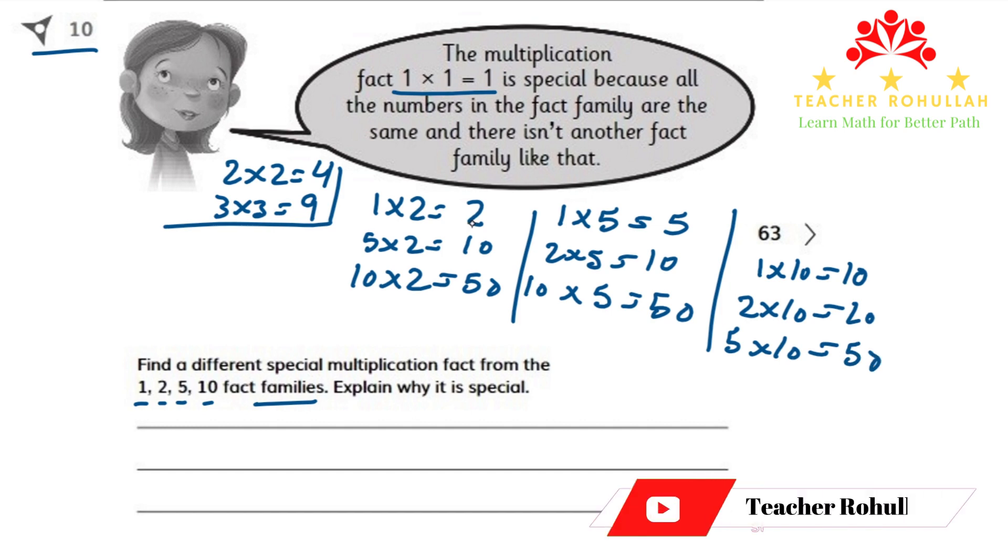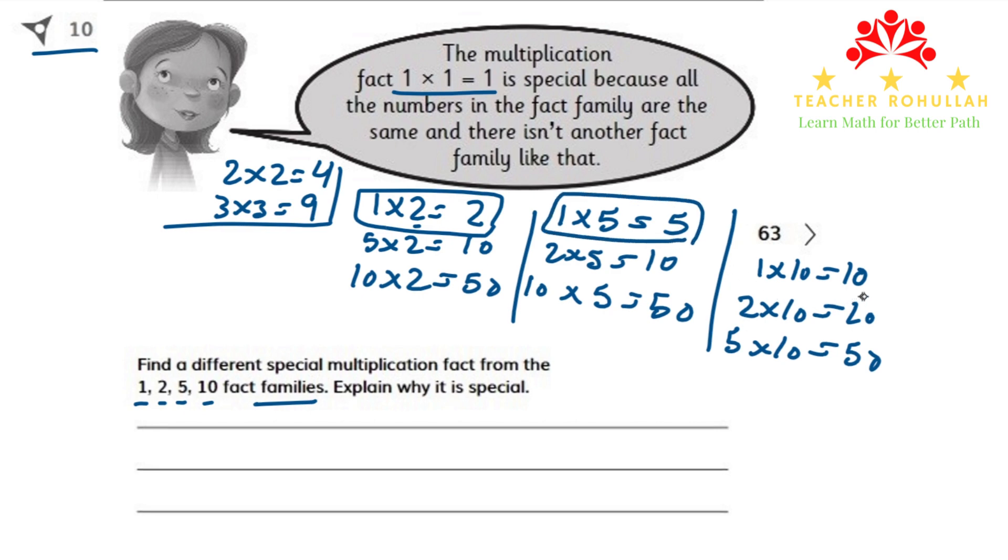If we look at these fact families, we can see that any number which is multiplied by 1 is giving us the same number. 5 multiplied by 1 is still 5. 10 multiplied by 1 is still 10. We can say that any number multiplied by 1 gives us the same number.